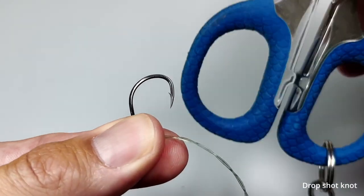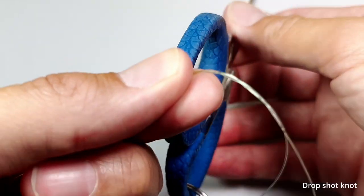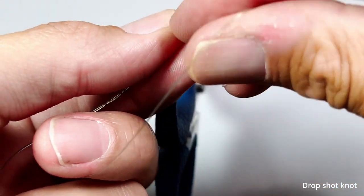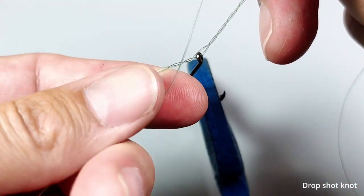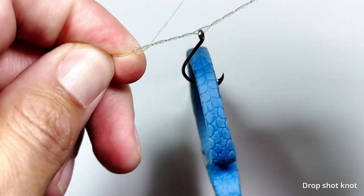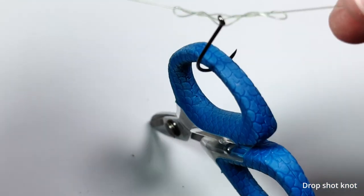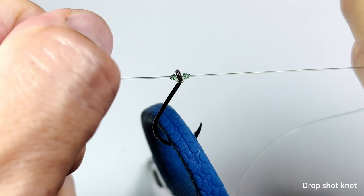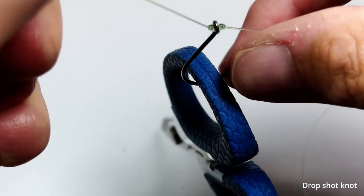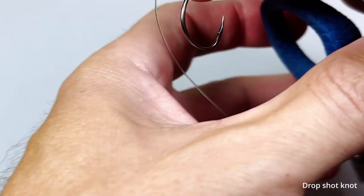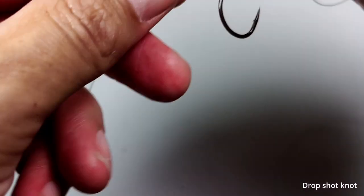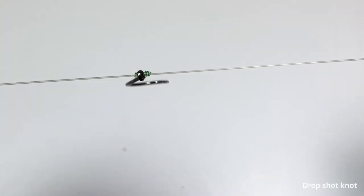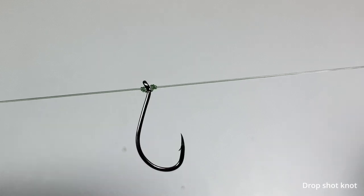I place the handle of my scissors on the hook to give it some weight as I pull both sides of the knot. This knot helps the hook to stay perpendicular to the line.